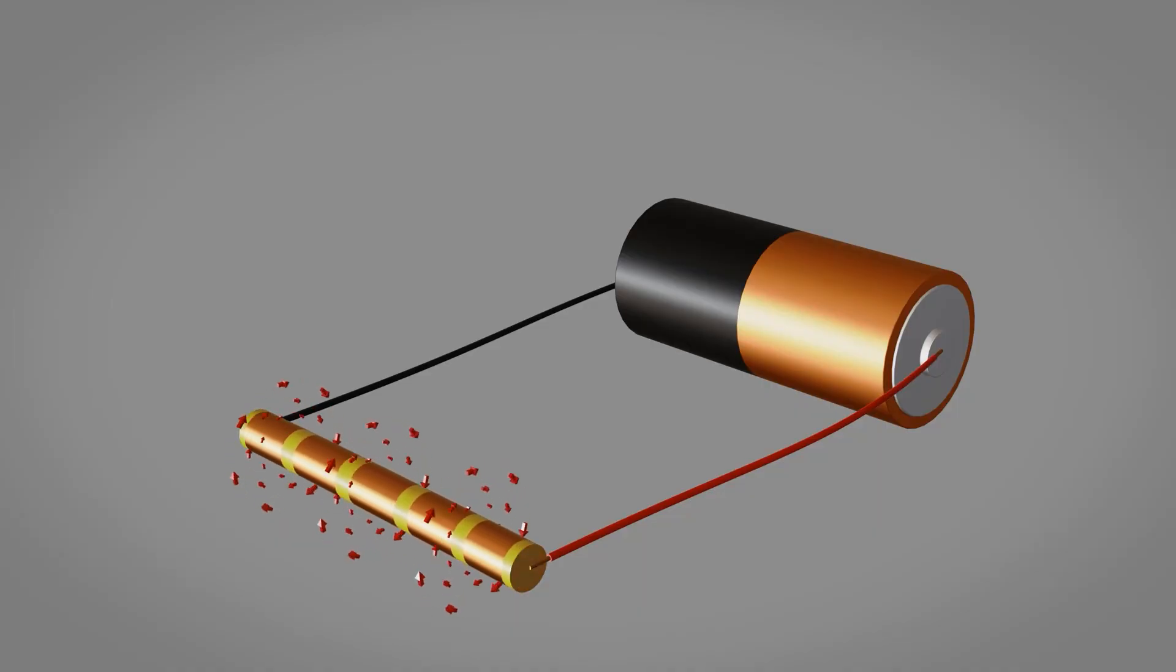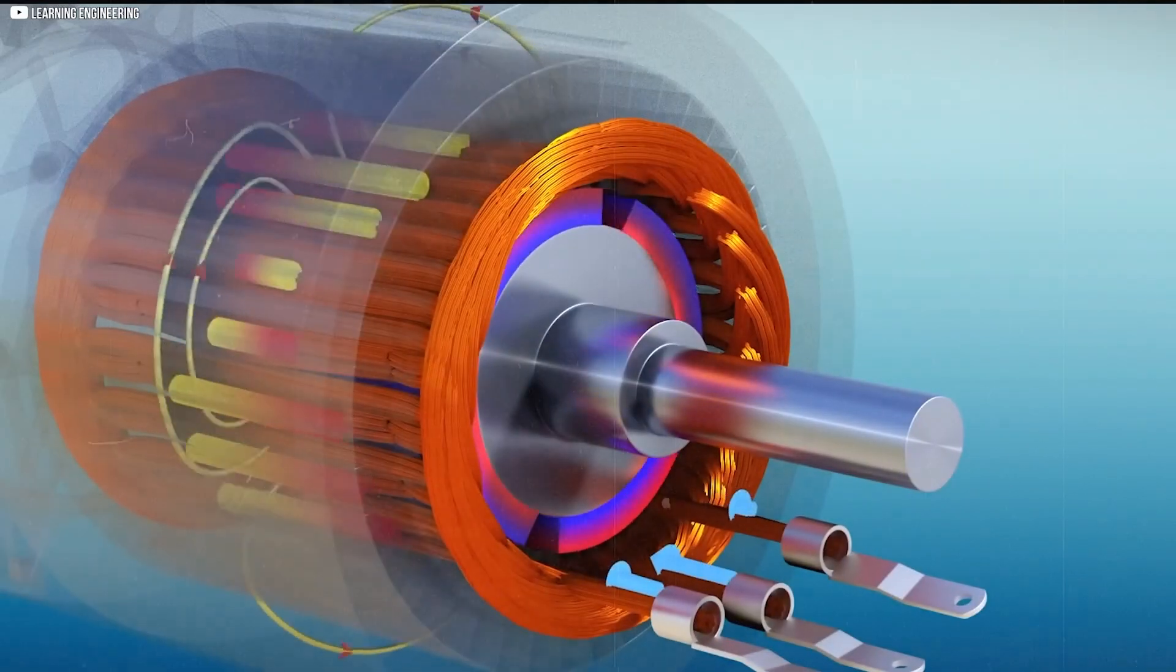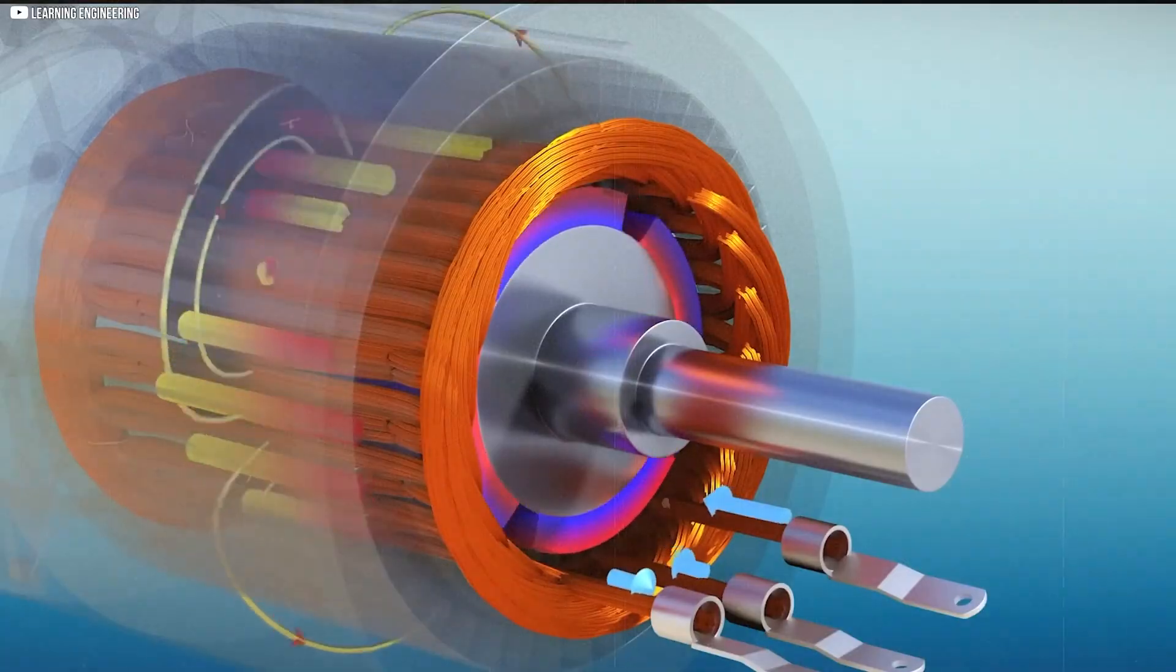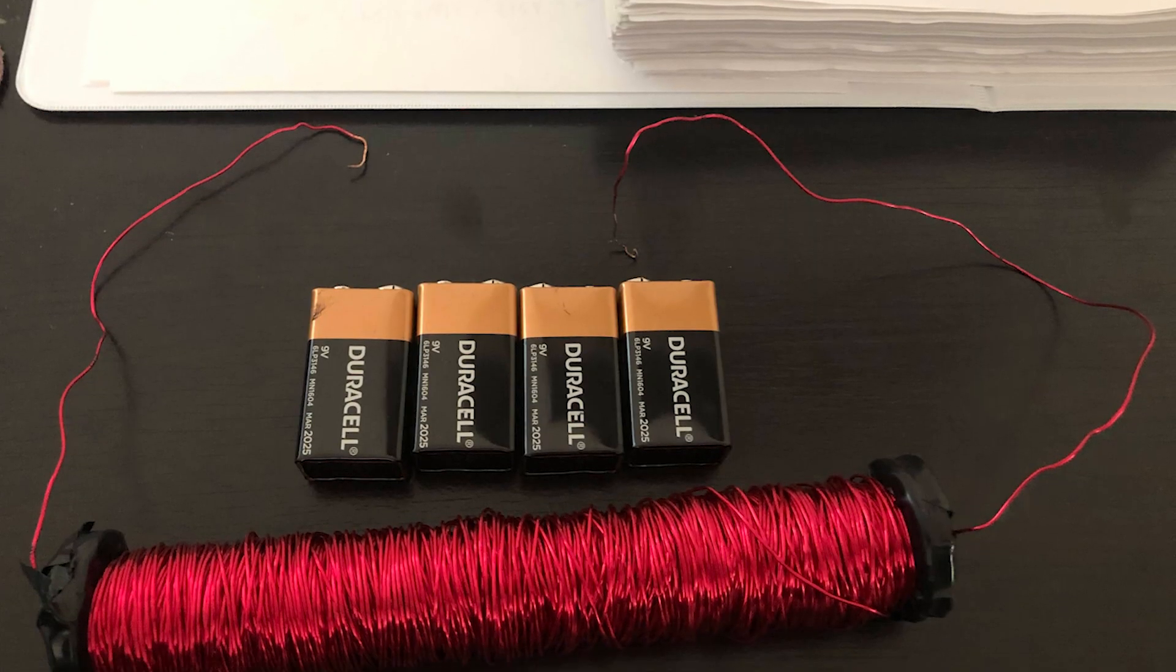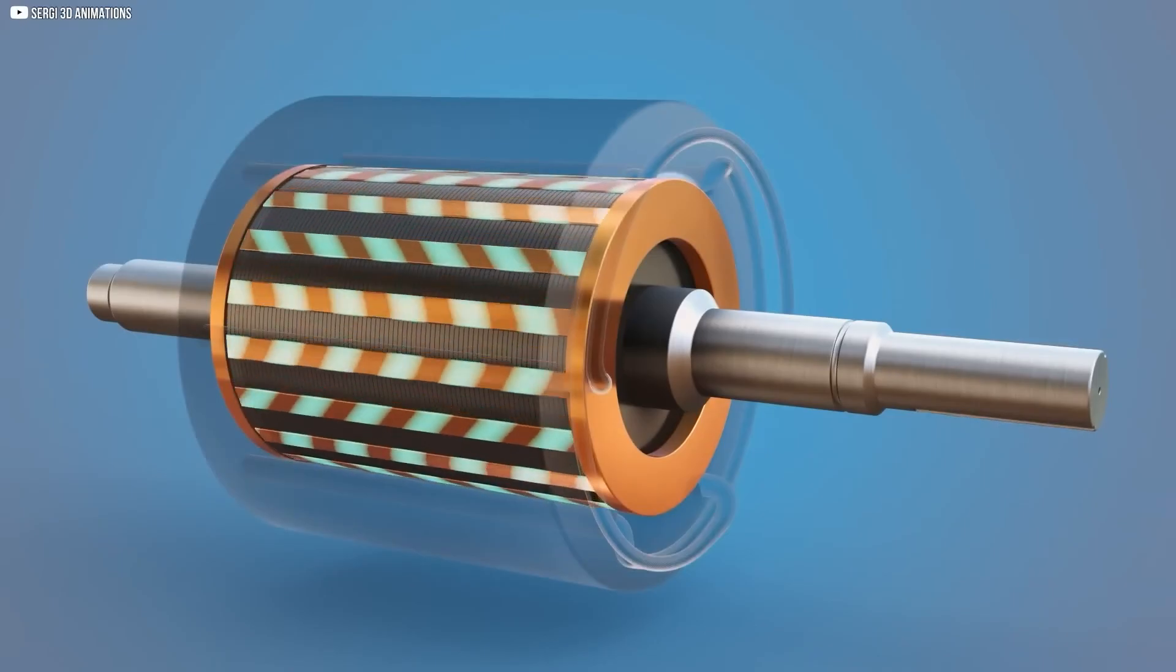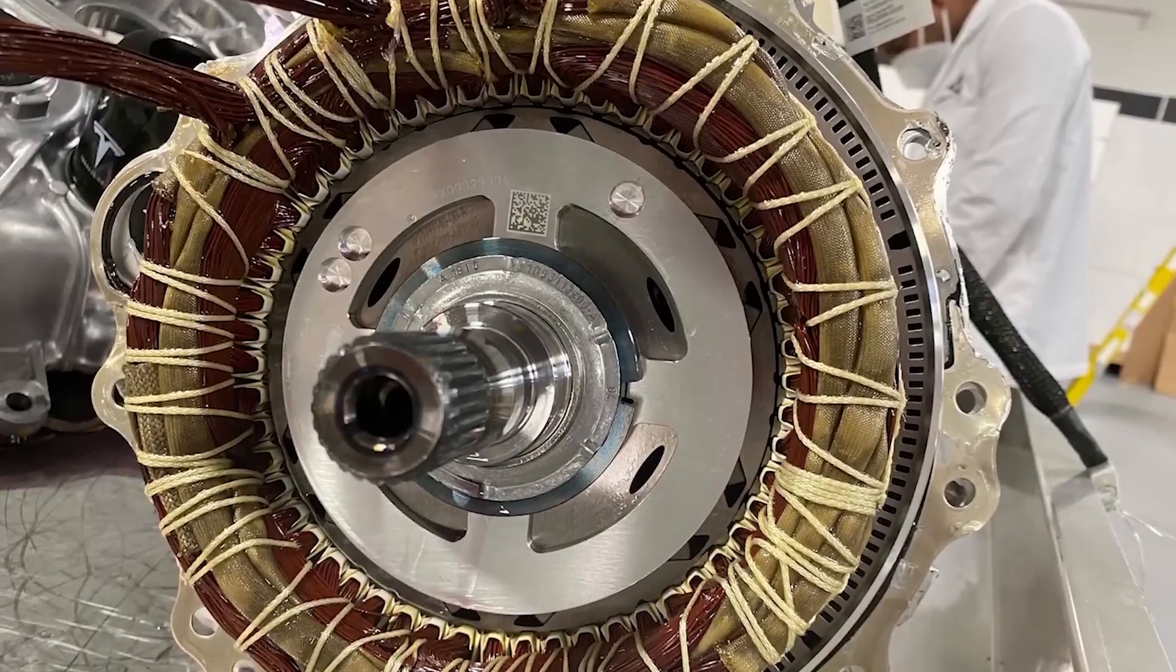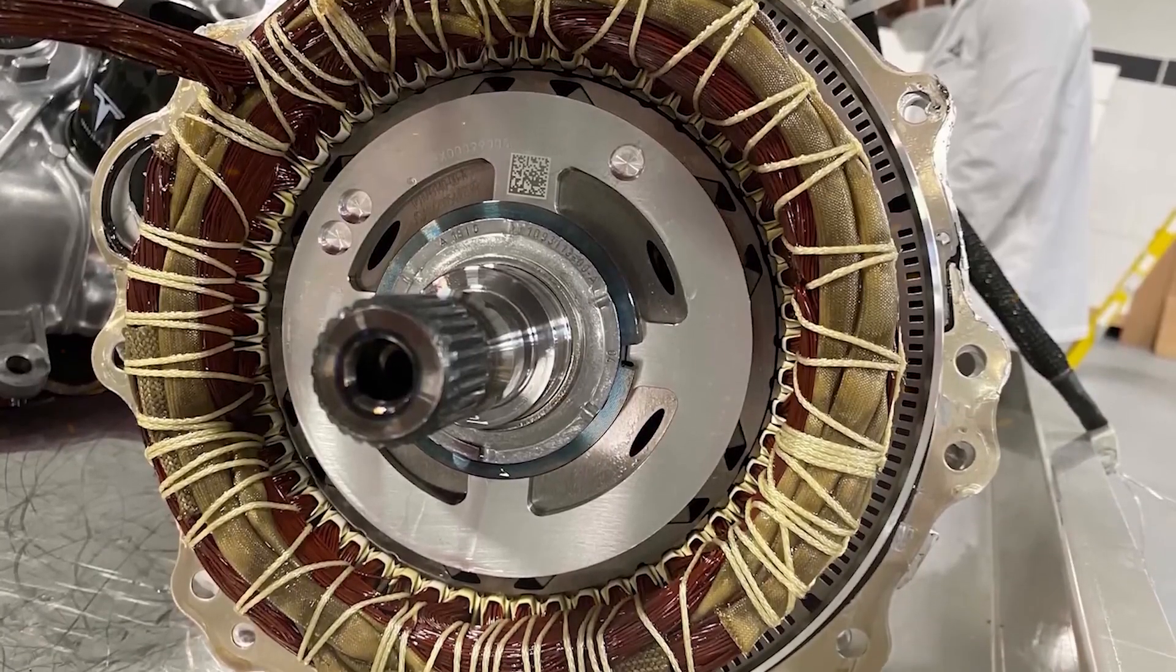Another way to increase torque is to use more electricity. By increasing the voltage, you increase the current flowing through the coils, which directly boosts the strength of the electromagnet. However, more electricity also means more heat, so the motor has to be designed to handle that extra load without overheating.